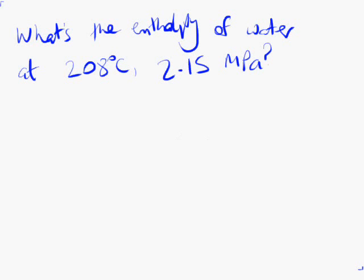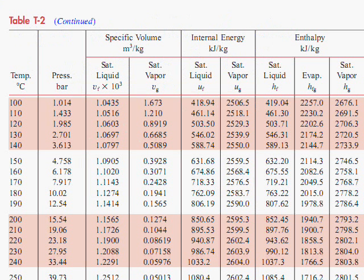In this example, we're looking at water at 208 Celsius and 2.15 megapascals. So if you go to the saturated water table, we are in this region here. Our saturation pressure is somewhere between 15 and 19 bar. Our pressure is 2.15 megapascals, 21.5 bar. So we are certainly above saturation pressure and we must be in the compressed liquid phase.